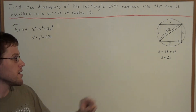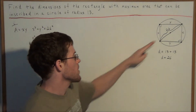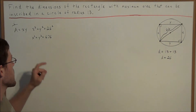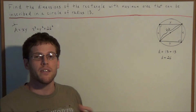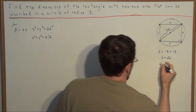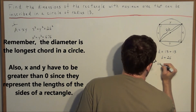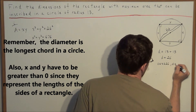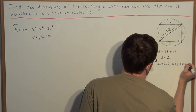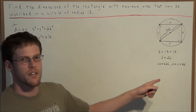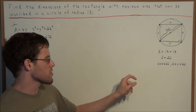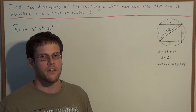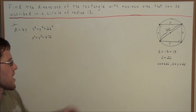This places limits on x and y. Since the diameter of the circle is 26, x and y can't be any bigger than 26. So we have x is between 0 and 26, and y is between 0 and 26. Sometimes we need this restriction on x and y in order to pick the right root when solving.